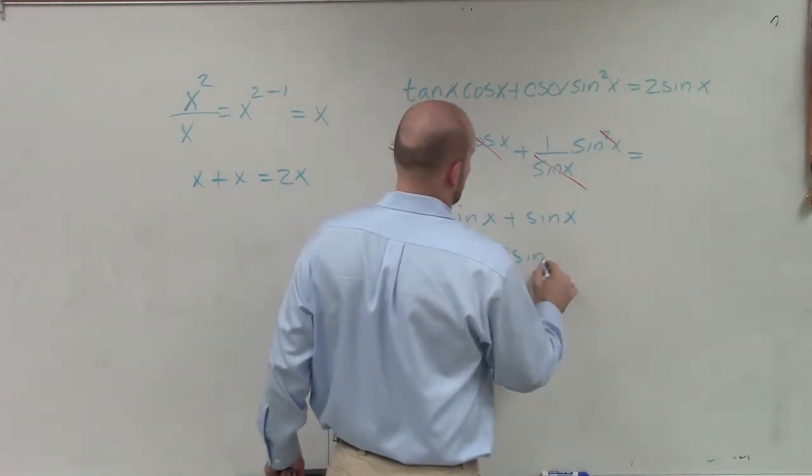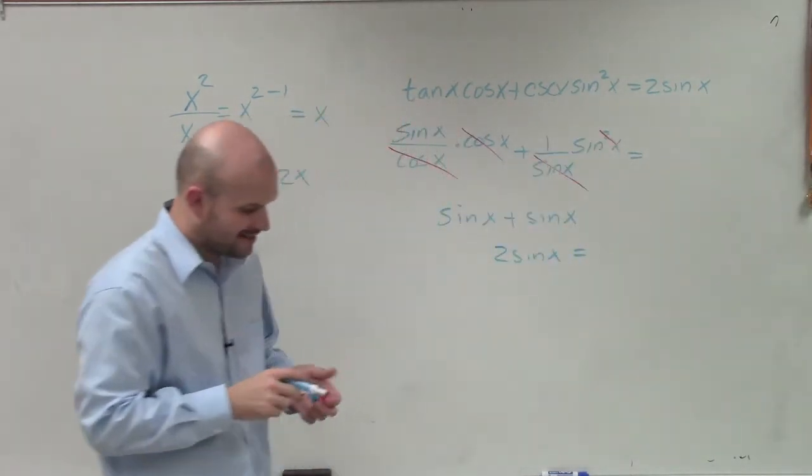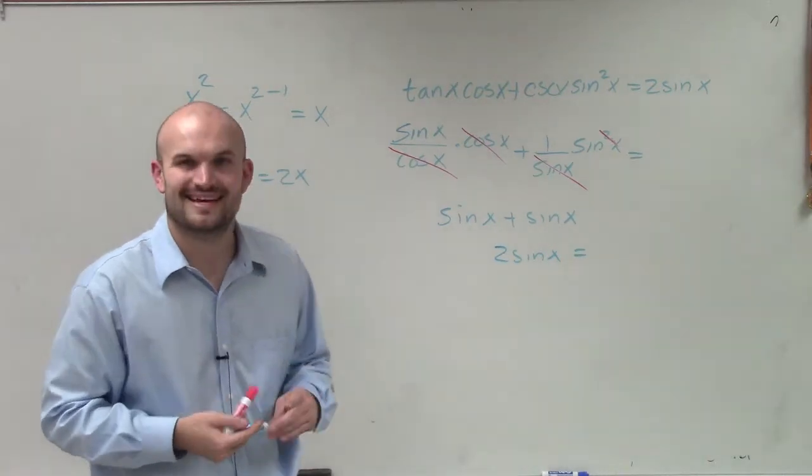So this is going to be 2 sine of x, which is exactly the same as our right-hand side. So that is how we're going to verify that identity. Thanks.